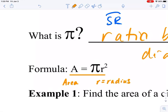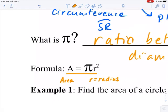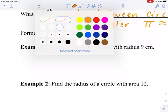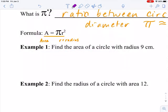The formula for the area of a circle is area equals pi r squared, where r is the radius. And we'll use this formula to solve some problems. Here's our first example.